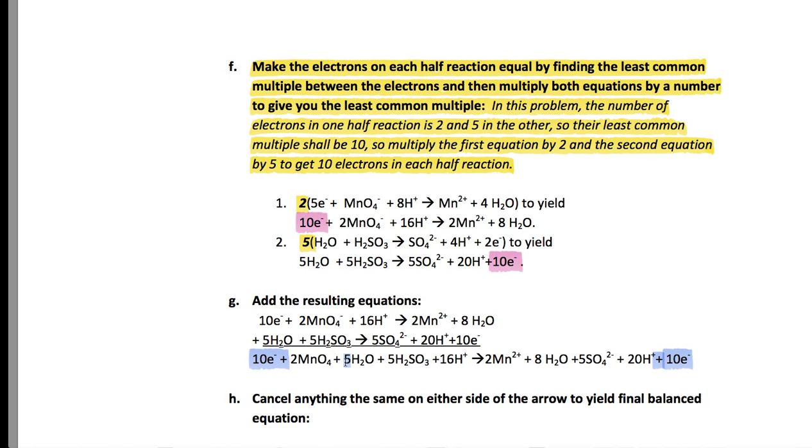But look, we got some waters also that can cancel. So subtract these five waters over from these eight waters and you'll get three waters left on the right side. You can't have any negative coefficients.